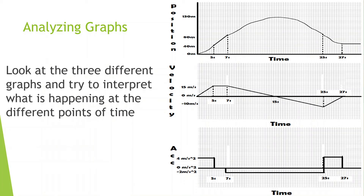Look at three different graphs and try to interpret what is happening at different points of time. A lot of students have a hard time with graphs, but there are many graph problems in AP Physics. When we have a curved line going upwards like this, that shows it's accelerating — getting faster and faster. At the beginning when it's not that steep, it's going a very short distance in a very long time. Over here, it goes a very far distance in a very short amount of time, so we can see it's getting faster and faster on this position versus time graph.